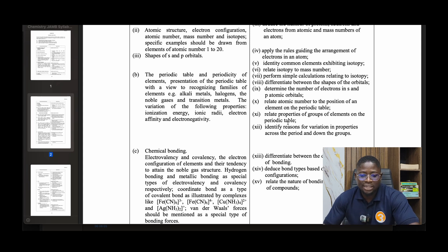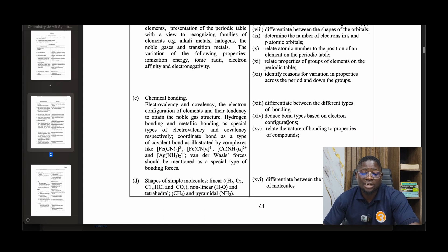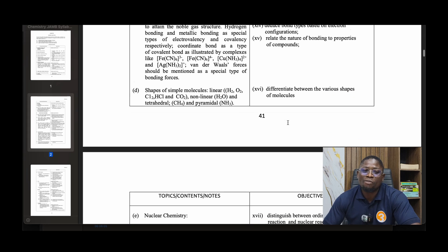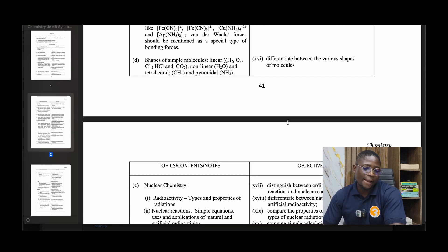The variation of properties: ionization, ionic radii, electron affinity, and electronegativity. Chemical bonding: electrovalency and covalency, the electron configuration of elements and their tendency to attain noble gas structure. Hydrogen bonding and metallic bonding are special types. Coordinate bond as a type of covalent bond illustrated by complexes like copper and silver complexes. Van der Waals forces should be measured as a special type of weak bonding force.